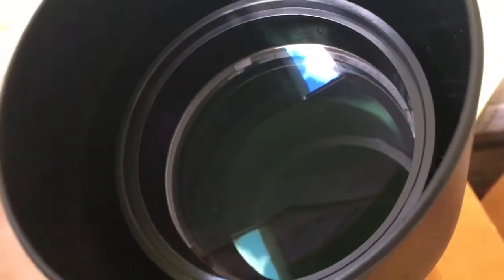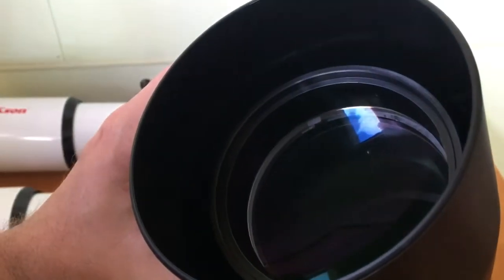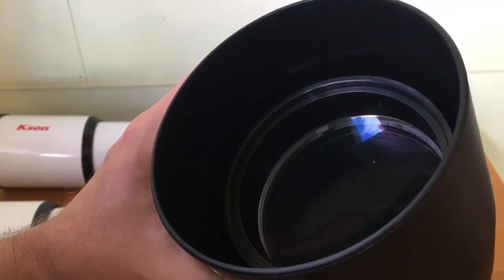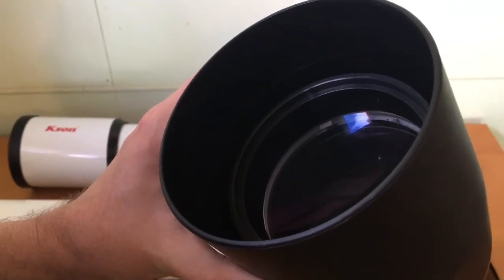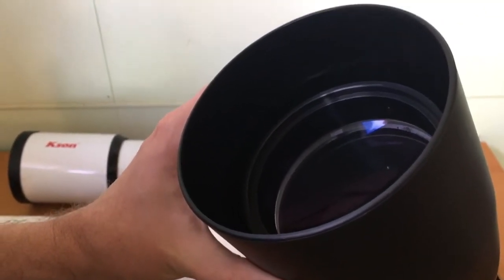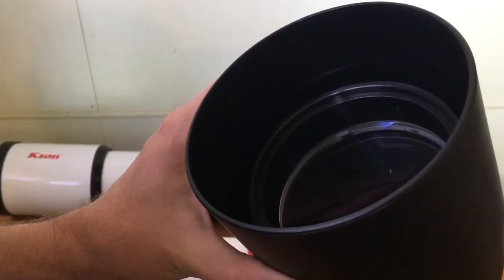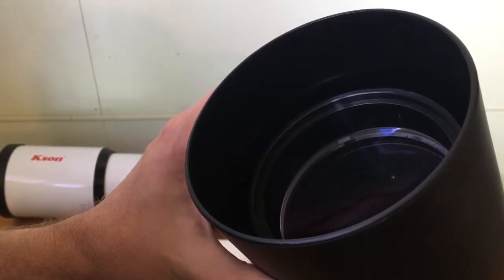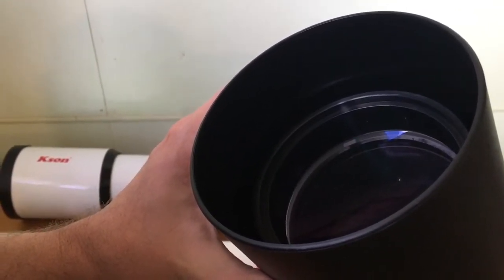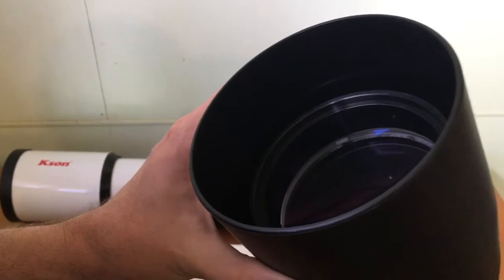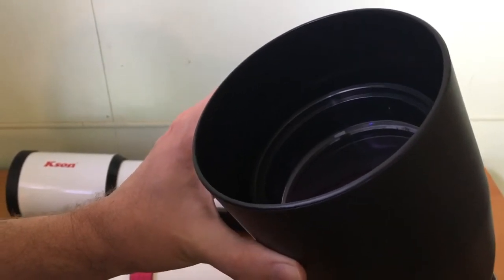So you can start going after objects which are maybe a little bit fainter. Some of your deep space objects will be quite enjoyable to view through a refractor. And of course one advantage of a refractor over a reflector is you never have to collimate it. You also don't have the diffraction spikes which are common when you get a reflector.